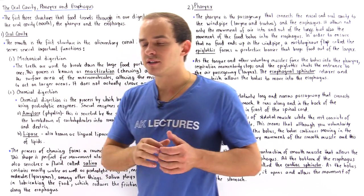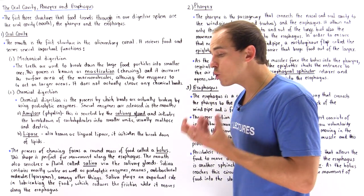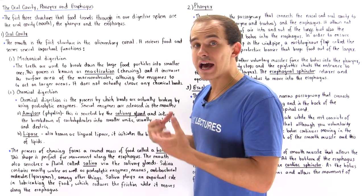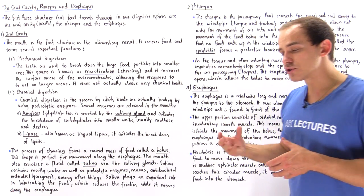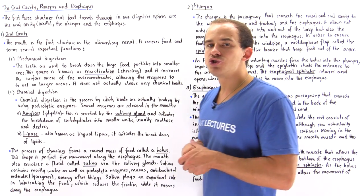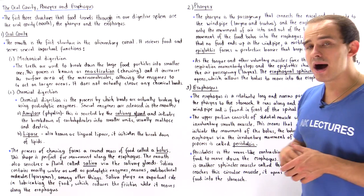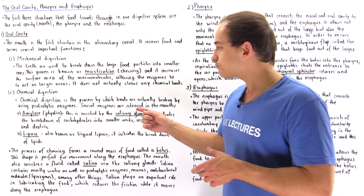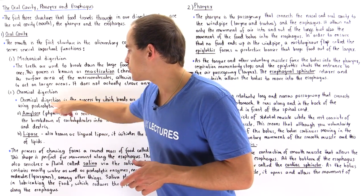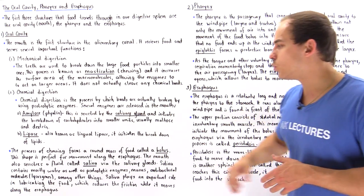Chemical digestion is the process by which our proteolytic enzymes actually break down and cleave the chemical bonds that hold our macromolecules together. These proteolytic enzymes catalyze the reaction known as hydrolysis — a catabolic reaction that breaks down chemical bonds using water. The two types of proteolytic enzymes found in the mouth are amylase, also known as tylin, as well as lipase, also known as lingual lipase.